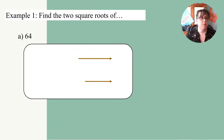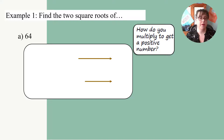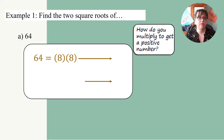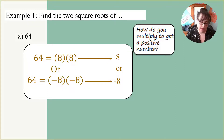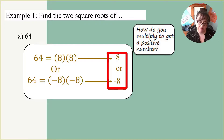Let's find the two square roots of 64. How do we multiply to get positive numbers? 8 times 8 gets us to 64, so one square root of 64 is 8. But negative 8 times negative 8 is also 64, so the other square root of 64 is negative 8. We have an answer of both 8 and negative 8.